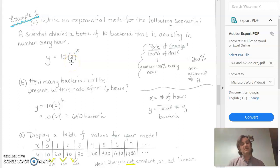Now be careful because of order of operations, this is not 20 to the x. This is 10 times 2 to the x, and you'll need to put it in your calculator that way.